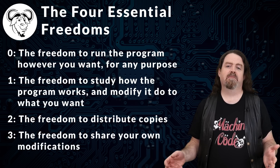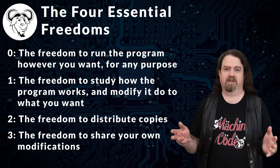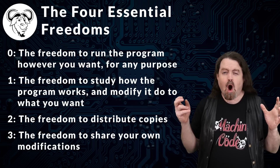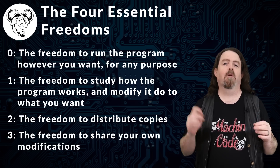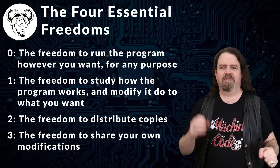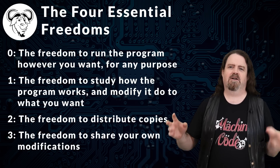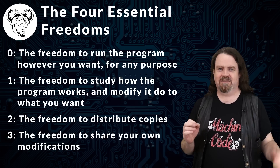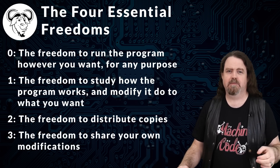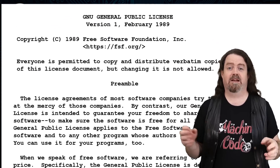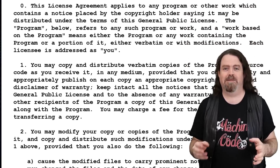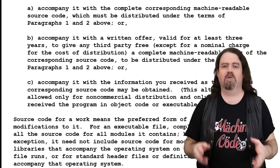By 1991, the GNU project had almost created a complete operating system. They had a compiler, a linker, file system, text editors, search tools. All they were missing was a working operating system kernel — which is a bit like saying you've almost built a car: you've got wheels and seats and windows and a stereo and a gearbox, you just haven't quite figured out how to do the engine yet. Perhaps more significantly, they had created and published the GNU General Public License, the GPL, which codified the four essential freedoms into a format that, if necessary, could be enforced by a court of law. At least in theory.